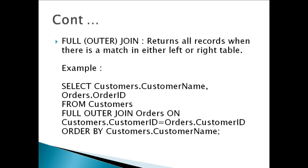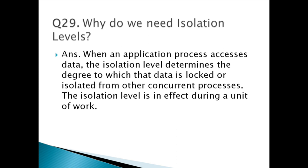FULL OUTER JOIN returns all matching records from both tables whether the other table matches or not. The FULL OUTER JOIN keyword returns all matching records from both tables. So if there are rows in customers that do not have matches in orders, those rows will be listed as well.